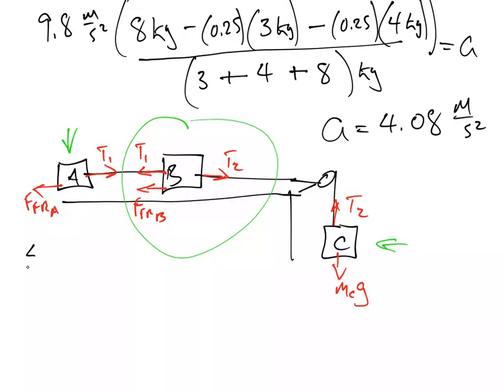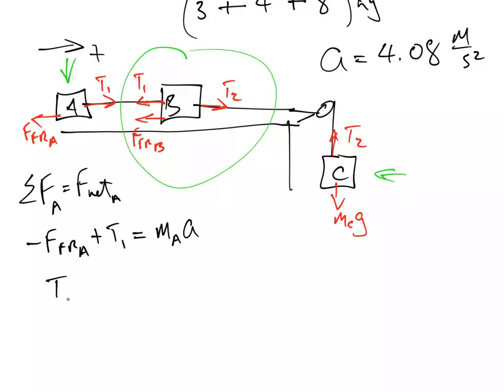So if we do the summation of the forces on mass A, we're going to get F net on A. Of course, we know that this is the positive direction. And therefore, we're going to say, alright, negative force of friction A plus T1 is going to equal F net A, which is mA a. And so, if we work that out, we're going to have T1 is going to equal mA a plus force of friction.